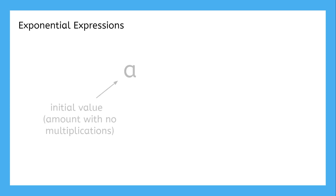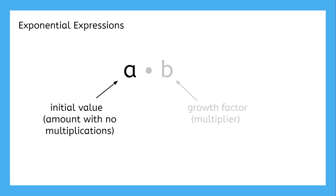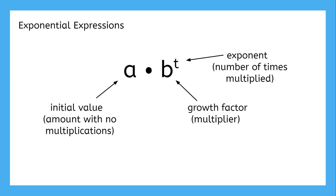Remember the form for exponential expressions: the initial value times some growth factor raised to some power. In any situation, the same initial value and growth factor can be used to find the resulting amount at any point. In these cases, we make the exponent an independent variable so that we can easily substitute any value we want for it. This also makes graphing exponential situations easier.